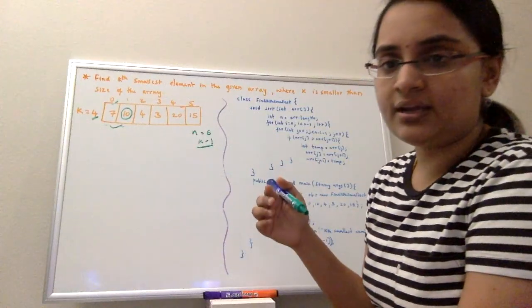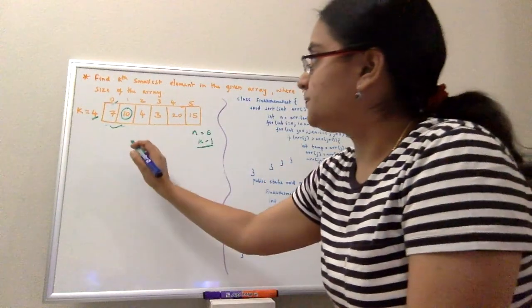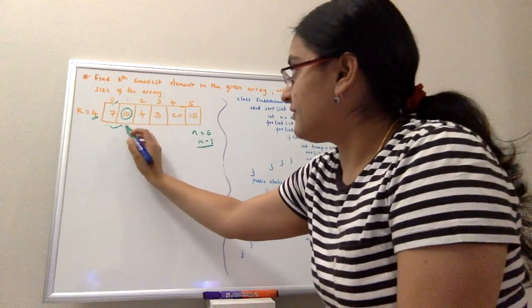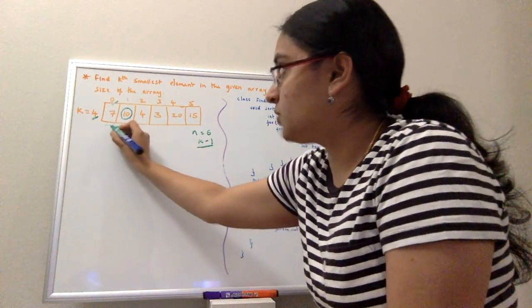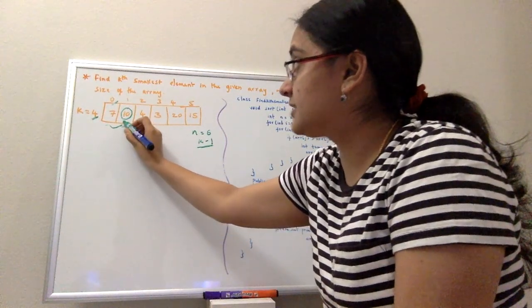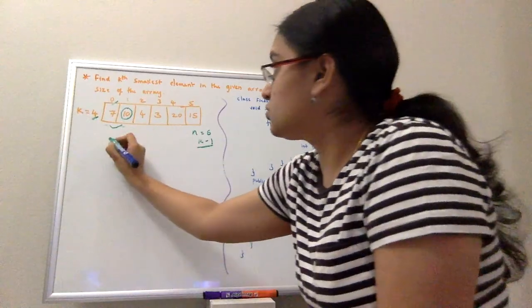So how bubble sort works is comparing 7 and 10. 7 is smaller so I'll not do anything. 10 and 4, yes 10 is greater, so I'll swap these two.